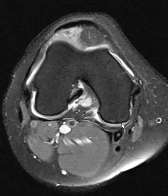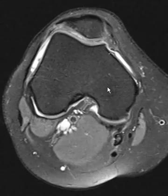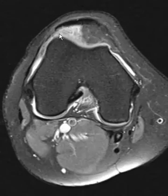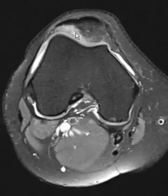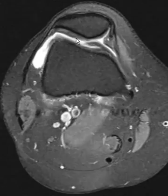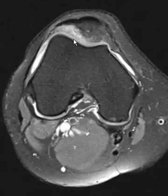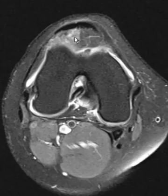We also see this on the axial view just here. You can see this confluent edema, more pronounced than usual — a great example of it in the superior lateral aspect of Hoffa's fat pad.